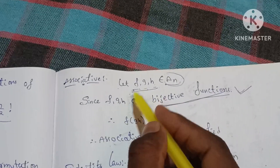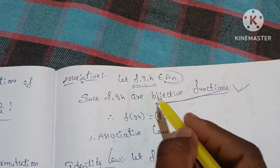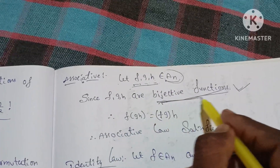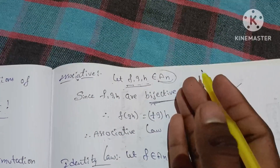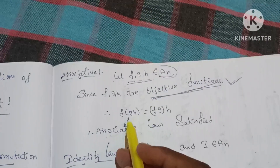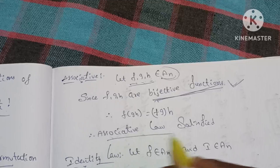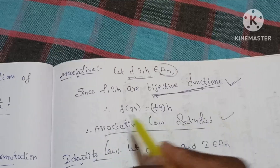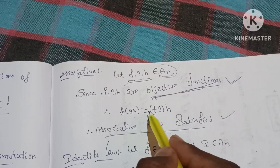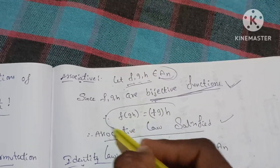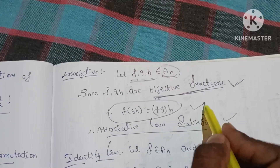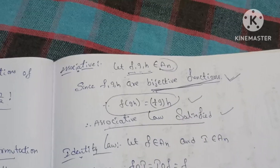Since f, g, h are bijective functions, and bijective functions satisfy the associative property, we have f∘(g∘h) = (f∘g)∘h. Therefore the associative condition holds.